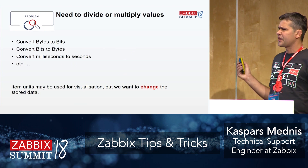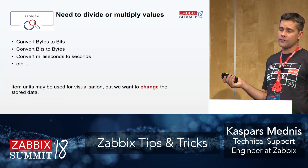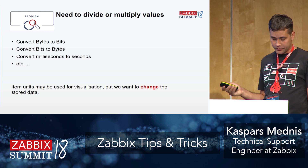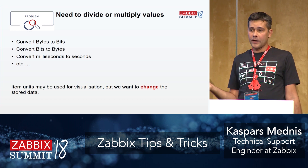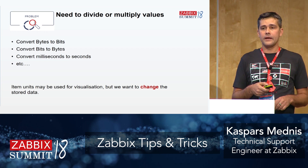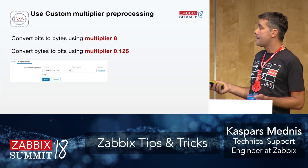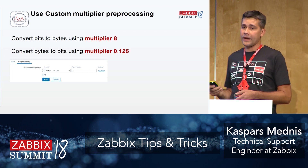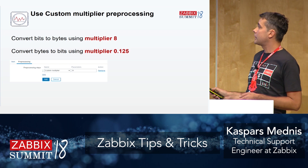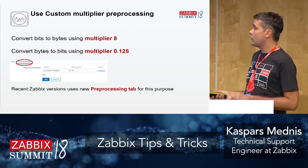A really simple example used for years in Zabbix: in previous versions (3.0) the multiplier was stored in the item tab; now it's moved to the pre-processing tab. We want to convert bytes to bits or bits to bytes. Go to the pre-processing tab, add a multiplier. With multiplier 8 you can get bits from bytes. There is no divide function, but you can use values smaller than 1 to divide — it's just math.